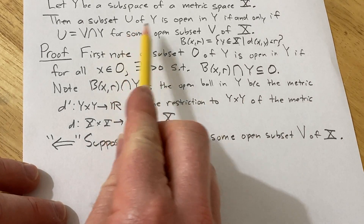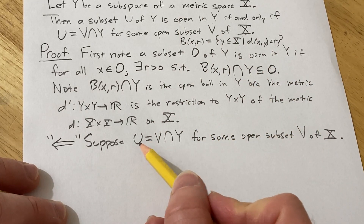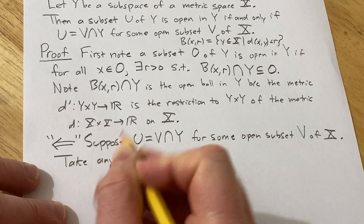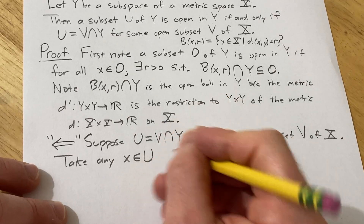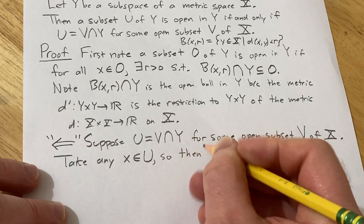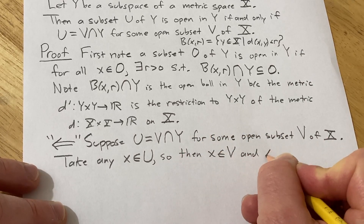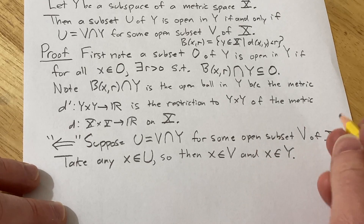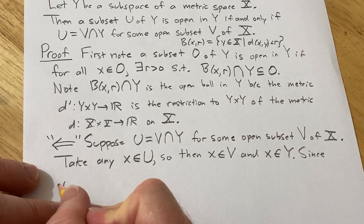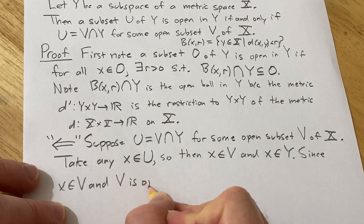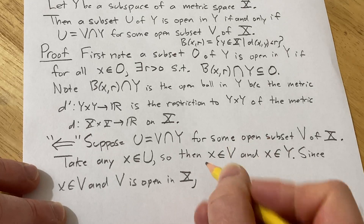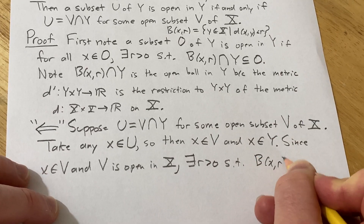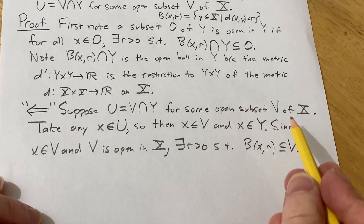The claim is that U is open in Y. To show U is open in Y we have to show every point is an interior point. Take any x in U. That means x is in V and x is in Y. Now, since x is in V and V is open in X, there exists a positive number r such that the open ball centered at x of radius r is contained entirely in V.